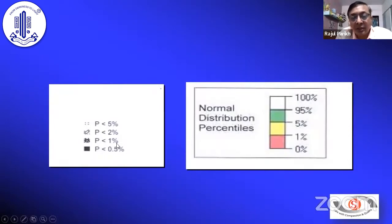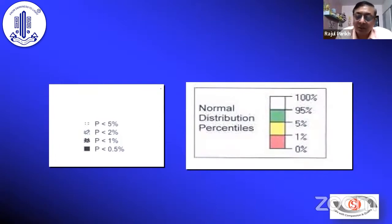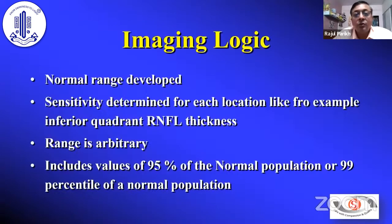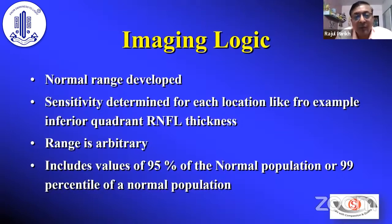Imaging and perimetry have a similar principle. We've developed a normative database, and based on that, we decide the abnormality value. In imaging, we use percentiles: upper 95th percentile, lower 5th percentile, and lower 1st percentile. The lower 5th percentile is usually borderline; lower 1st percentile is abnormal. The range is arbitrary, and everything the machine labels abnormal doesn't translate into disease — we have to correlate clinically. That is the most important point to keep in mind.